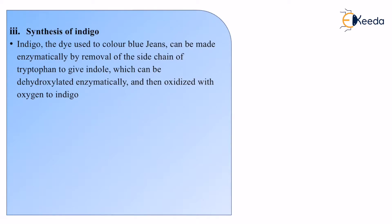Indigo is the dye used to color blue jeans. It can be made enzymatically by removal of the side chain of tryptophan to give indole, which can be dehydroxylated enzymatically and then oxidized with oxygen to give indigo. The term indigo generally comes from the color indigo, which is a dark violetish color, and when used in small quantities it gives a nice blue color to jeans. Jeans are a kind of pants which are very widely used, and this similar color has come because of the use of this particular compound indigo.